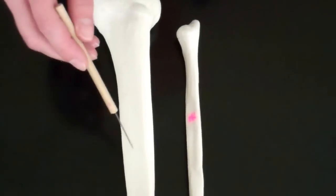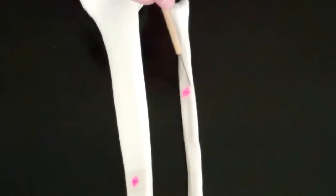The tibia, which is the larger of the two, and the fibula, which is the skinnier of the two. This one doesn't bear any weight; it's just there for stabilization.